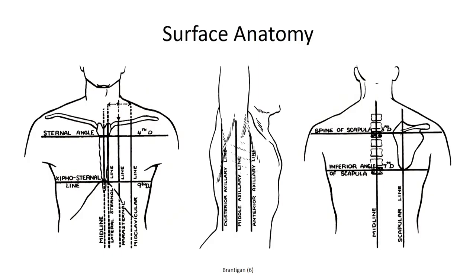Before we study the anatomical components of the thoracic wall in detail, we need to give some attention to the surface anatomy in this region. A series of imaginary anatomical lines serve as reference points for a slew of medical procedures. First is the anterior median or mid-sternal line, which signifies the intersection of the mid-sagittal plane with the sternum anteriorly. As we move out laterally, the mid-clavicular line passes vertically through the midpoint of the clavicle. The anterior axillary line passes vertically through the anterior axillary fold made by the inferolateral border of the pectoralis major muscle. The landmark for the mid-axillary line is the deepest point of the axillary fossa, while the posterior axillary line lines up with the posterior axillary fold formed by the latissimus dorsi muscle.